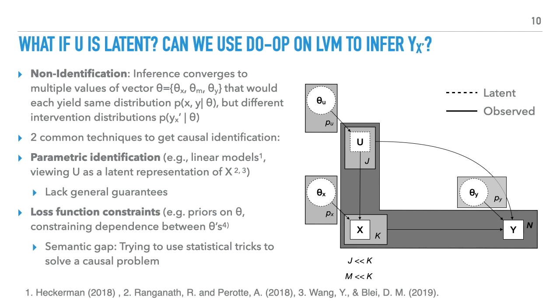Loss function constraints try to address the non-uniqueness of the thetas during training by, for example, using priors or enforcing independence between the parameters. Here, we have a semantic gap. We're trying to use a statistical solution to solve a causal problem.